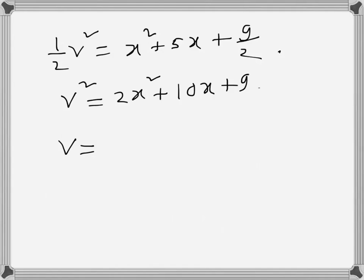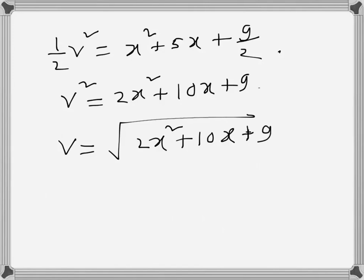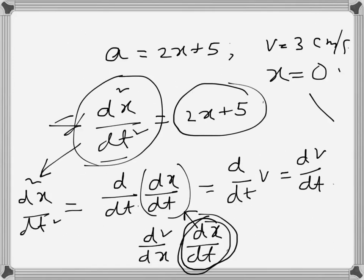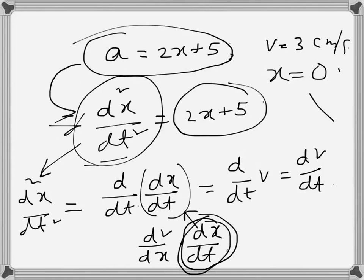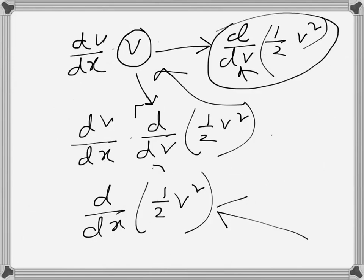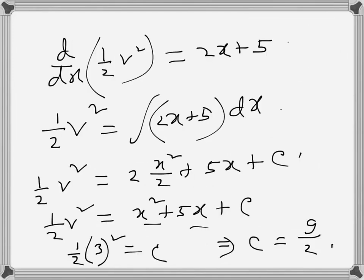So v² equals 2x² plus 10x plus 9 is the expression for velocity in terms of displacement. We started with acceleration given as a function of displacement, manipulated it using the chain rule to get d/dx(½v²), integrated both sides, and applied the boundary condition to find the final expression. This is one type of problem we may encounter, and I'll do a few more of these.